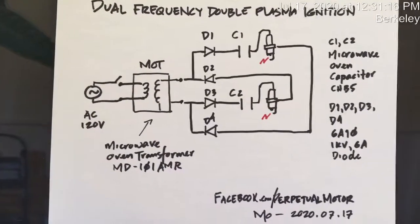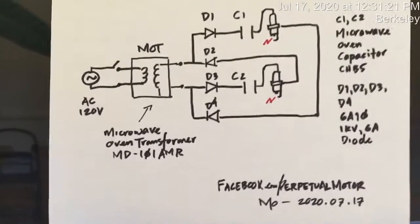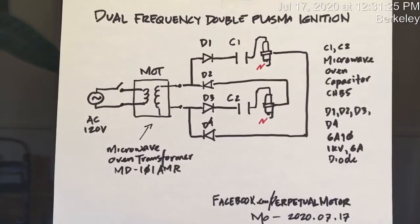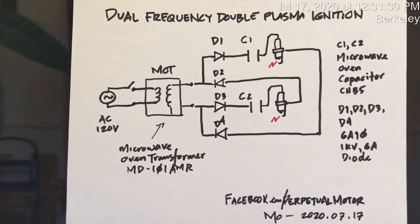What this also does is it accounts for any kind of back EMF, so any back EMF that's occurring has some place to go and it doesn't end up becoming an inductive loss inside the transformer.